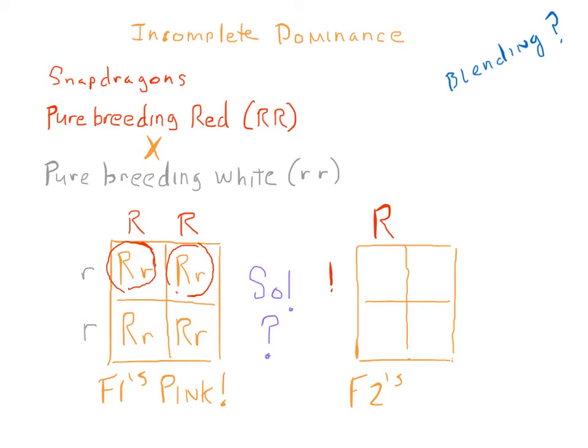Each F1 is going to contribute a big R gamete and a little r gamete. Lo and behold, the first F2 is big R, big R — which is red. Two of the F2s are big R, little r — which in this case is pink. And the final 25% are little r, little r — which is white.